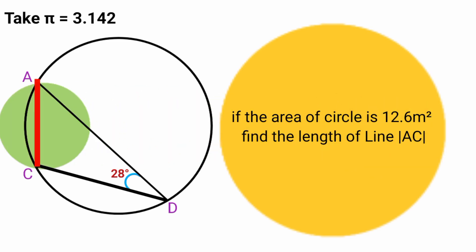Here we are asked to find the length of this line here, line AC, and we are given the area of the circle to be equal to 12.6 meters squared.